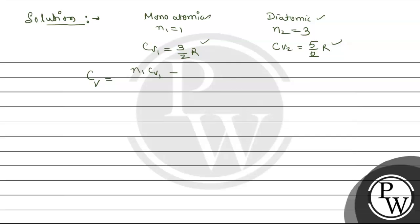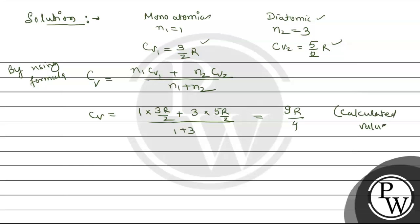Cv equals to N1 Cv1 plus N2 Cv2 upon N1 plus N2. By using the formula, we have Cv equals to 1 times 3R by 2 plus 3 times 5R by 2 upon 1 plus 3. Solving this, we get 9R by 4. This is the calculated value.